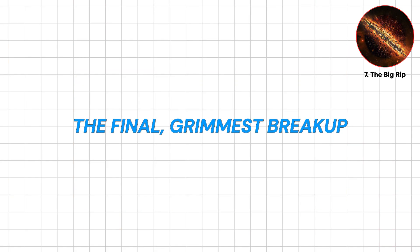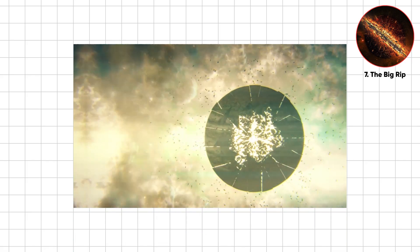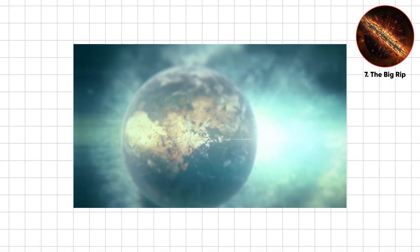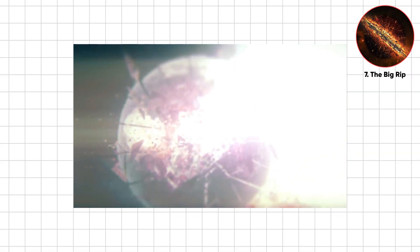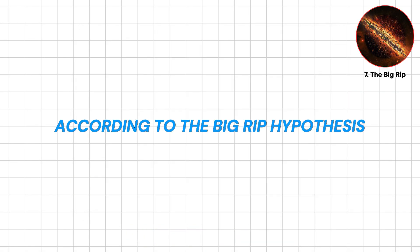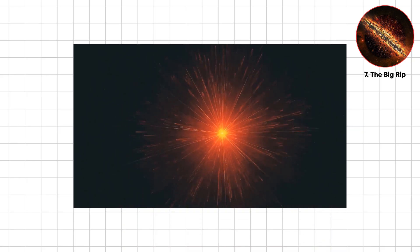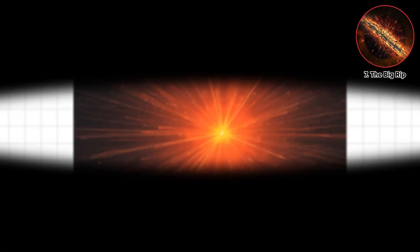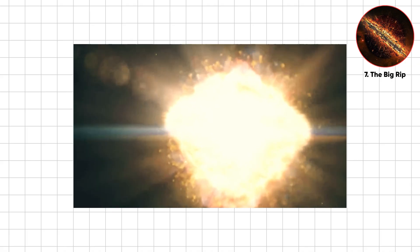Envision the universe's worst breakup, the final, grimmest breakup where every galaxy, star, planet, and atom is torn apart in a slow, relentless process driven by runaway cosmic expansion. According to the Big Rip hypothesis, dark energy will eventually push the universe into overdrive, stretching matter beyond its breaking point.